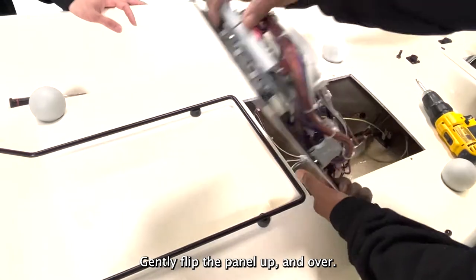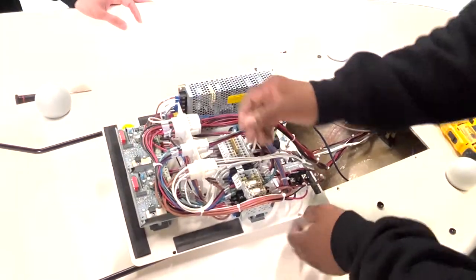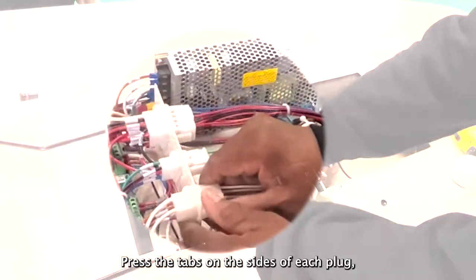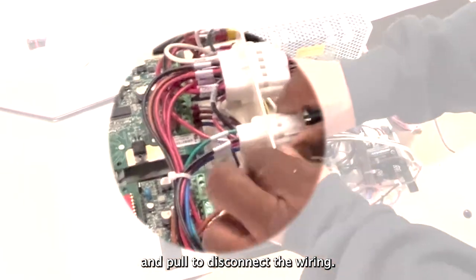Gently flip the panel up and over. Press the tabs on the sides of each plug and pull to disconnect the wiring.